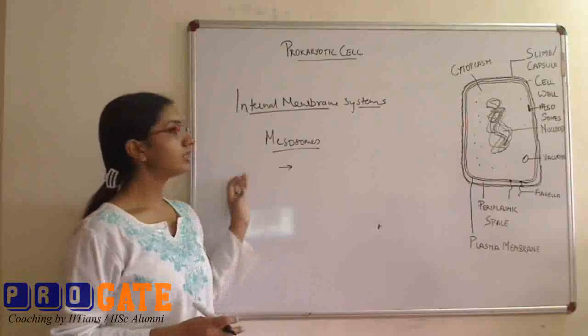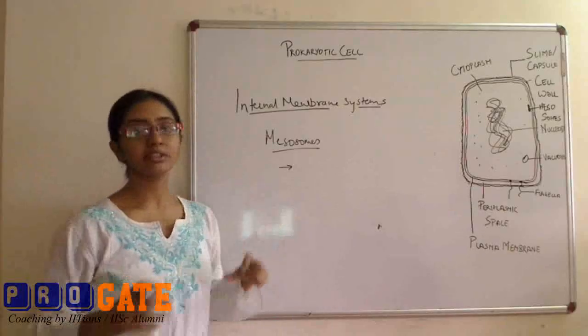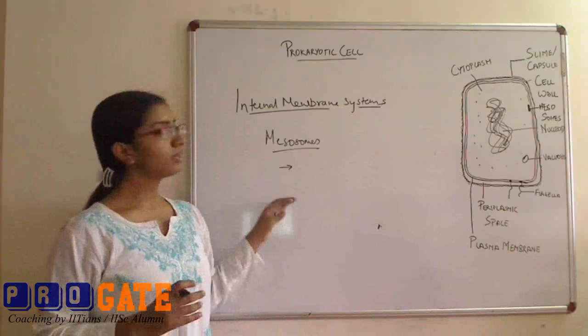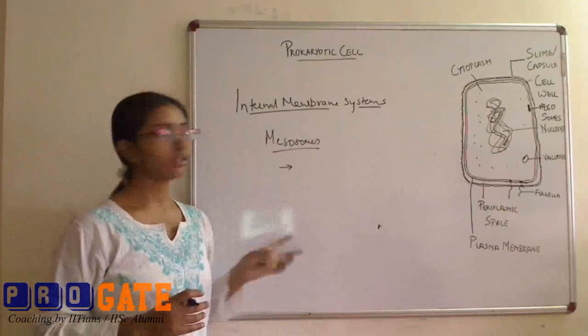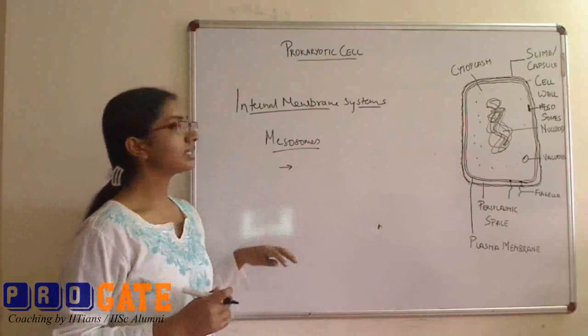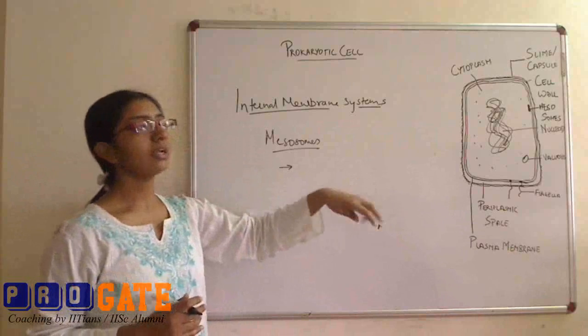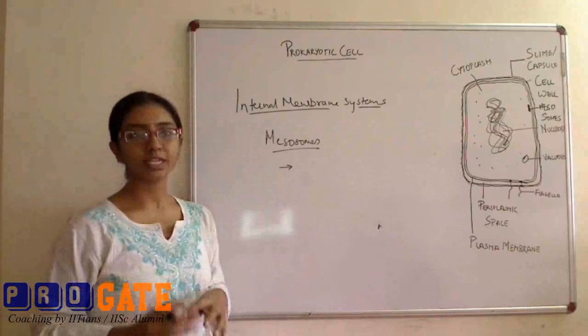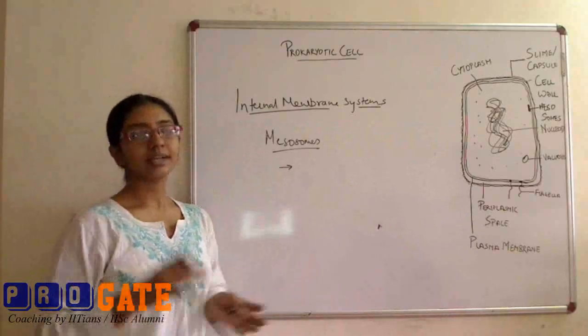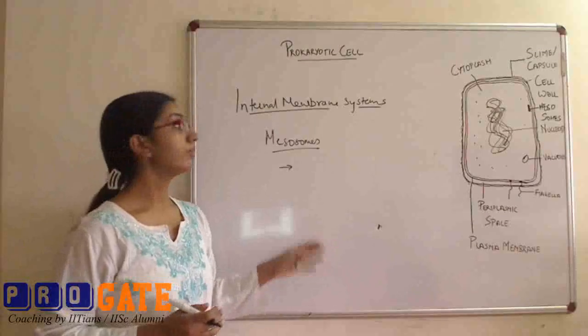Plus, it has been found that mesosomes are generally prominent in case when the cell is dividing, so it is also thought to be associated with the nuclear division of the cell. Apart from mesosomes, there are various other structures which are associated with the plasma membrane and somehow kind of replacement to the organelles that a eukaryotic cell would have, which are not present in the prokaryotic cell.